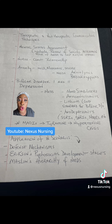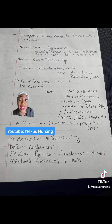Make sure you know the difference between bipolar 1 and bipolar 2 disorders. Make sure you know, as far as pharmacology, your mood stabilizers, your anticonvulsants, lithium. When it comes to lithium, you have to know those levels. You have to know the lithium levels and toxicity.